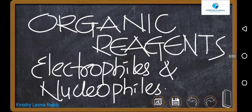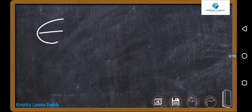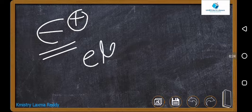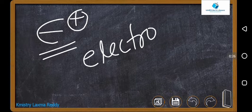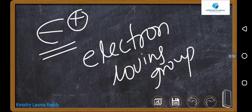Hello all, we will discuss about organic reagents now. Organic reagents are generally of two types: electrophiles and nucleophiles. The meaning of electrophiles is electron-loving groups — since electrons are negatively charged, electrophiles are the negatively charged-loving groups. Electron-loving groups are electrophiles.